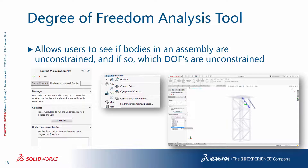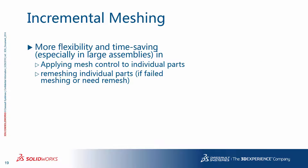In a complicated assembly with many parts, it may be difficult to make sure all parts are properly attached to each other, not least because sometimes there are actual gaps in the model due to tolerances or accounting for future welding of parts. The degree of freedom analysis tool allows users to see if bodies in an assembly are unconstrained, and if so, which degrees of freedom are unconstrained. Incremental meshing gives you more flexibility and saves time, especially for large assemblies. It is used to apply mesh control to individual parts or to remesh individual parts, whether because parts failed to mesh earlier or you want to remesh them with a different mesh density.